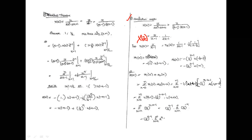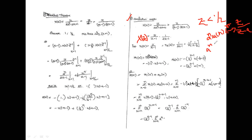Apply inverse Z-transform. Since |z| < 1/2 (left-hand side), X₁(n) = -(1)^n·μ(-n-1). For X₂(z) = (1/2)·[1/(z-1/2)]: using the formula a^(n-1)·μ(n-1) has Z-transform 1/(z-a), so X₂(n) = -(1/2)·(1/2)^(n-1)·μ(-n+1-1) = -(1/2)^n·μ(-n-1), since the minus sign comes from the left-hand side ROC.